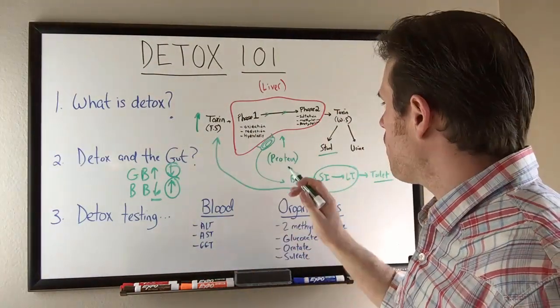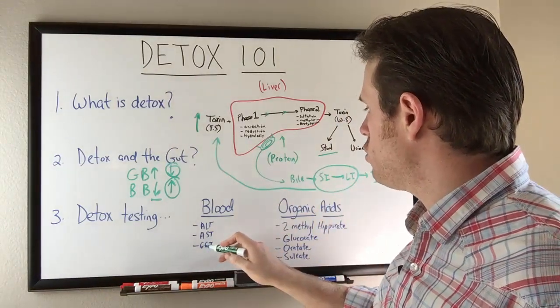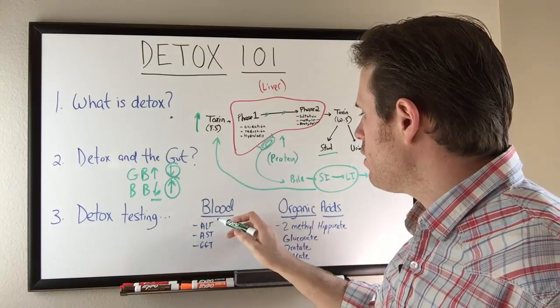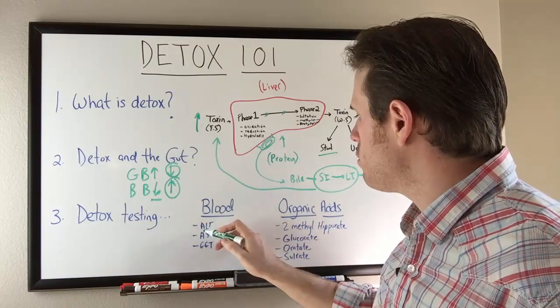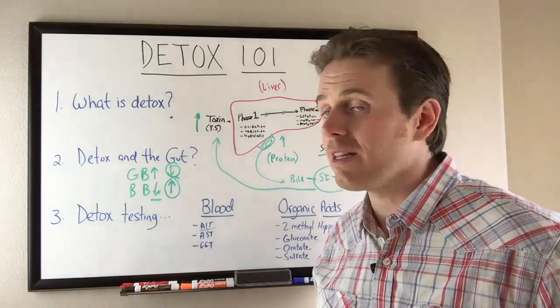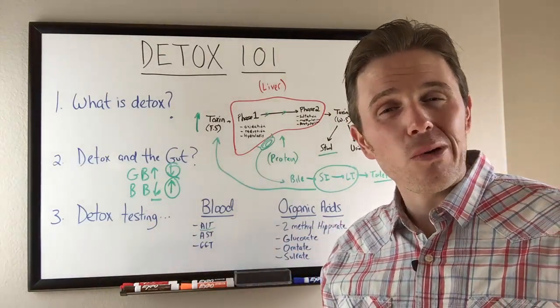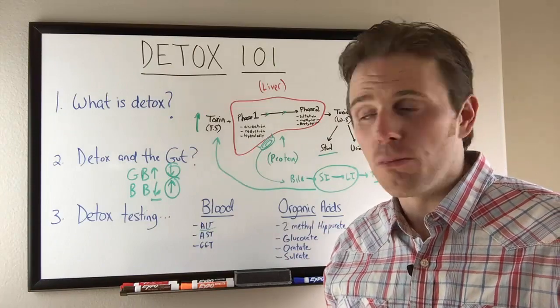GGT is a good marker for gallbladder issues. Think of G and GGT for gallbladder. This tends to go high with gallbladder issues. This is going to be liver. This is liver, but this tends to be more focused towards liver. Now we have functional ranges for these. When they go above 20 or so, we start to look at those detoxifying pathways a little more.